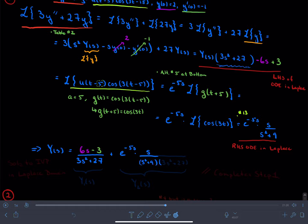Times 3s squared plus 27. And that completes step 1.